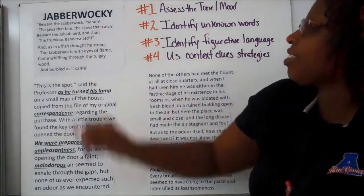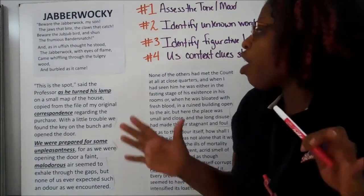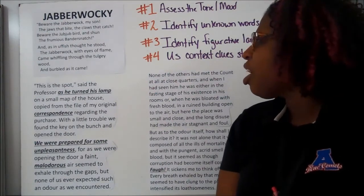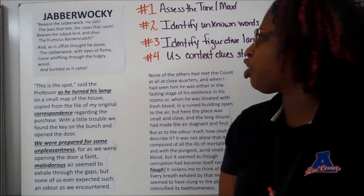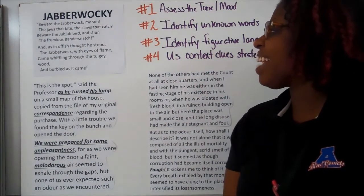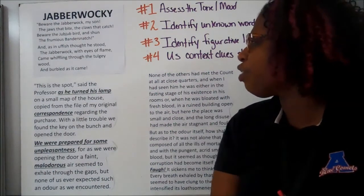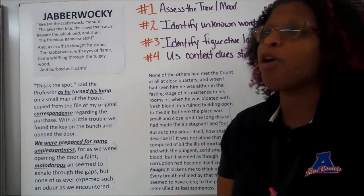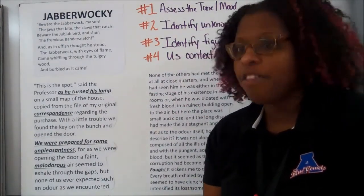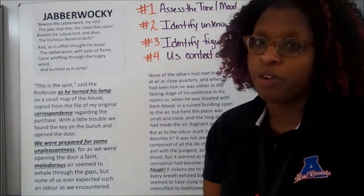Let's look at this example right here from a poem entitled Jabberwocky. 'Beware the Jabberwock, my son, the jaws that bite, the claws that catch. Beware the jub-jub bird and shun the frumious Bandersnatch. And as in uffish thought he stood, the Jabberwock with eyes aflame came whiffling through the tulgey wood and burbled as it came.' There are a lot of words in there that are unknown, that we don't recognize. But if we use the language, we can figure them out.